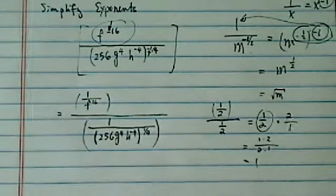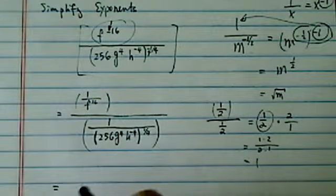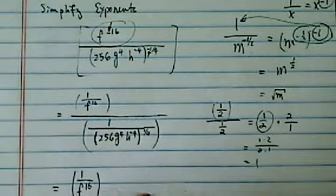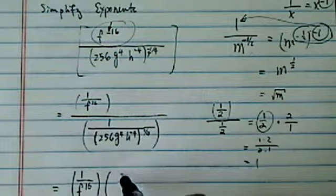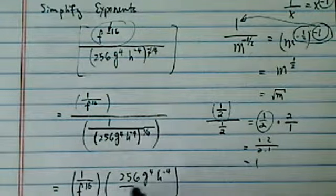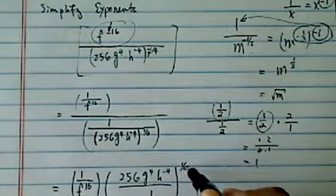So we're going to do exactly the same thing, even though this is a little more complicated. I'm going to keep the top, which is 1 over f to the 16, and flip the bottom, 256, g to the 4, h to the minus 4, over 1, the whole thing to the quarter.